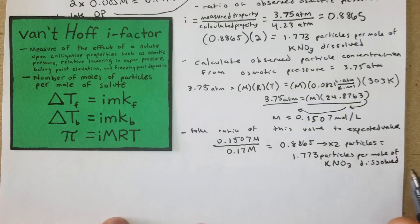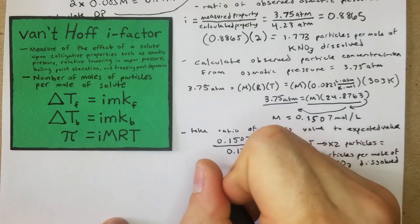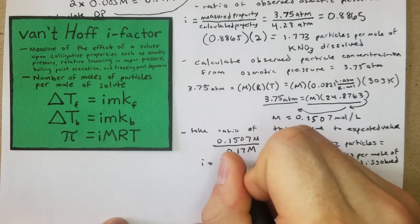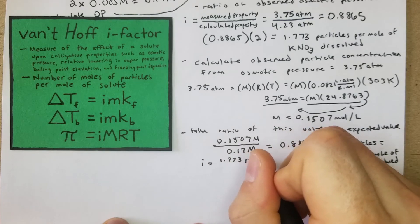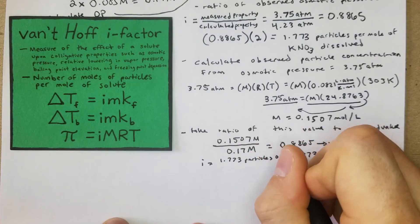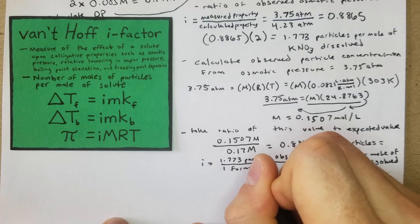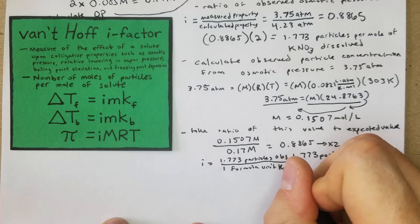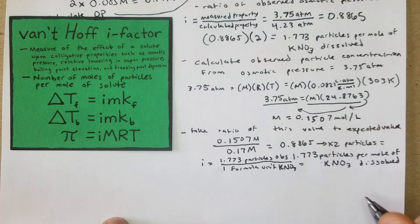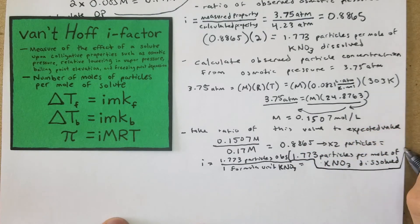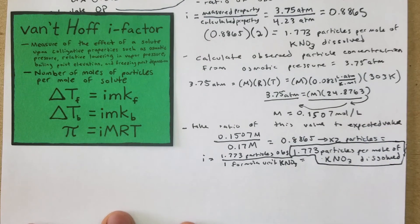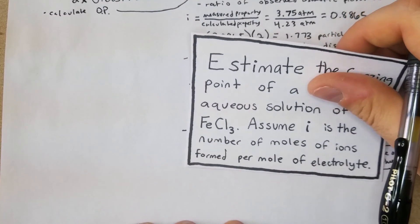So essentially what our i value is going to be is particles observed over one formula unit of KNO3. So there's our answer for that problem. Like I said, that was quite lengthy. I wanted to just kind of end off the video by doing a bit of a throwback to one of the old types of problems that we were doing here.